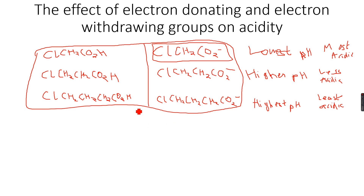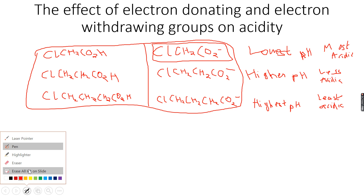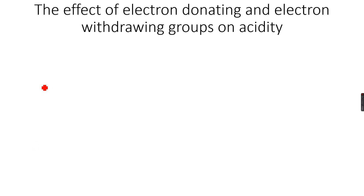Since an acid has to donate protons and not accept them, a higher tendency to accept H⁺ ions means lower acidity. We are done with this section and will now move on to the next part covering electron withdrawing and electron donating groups.